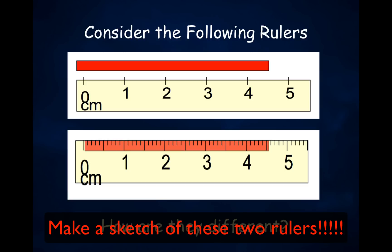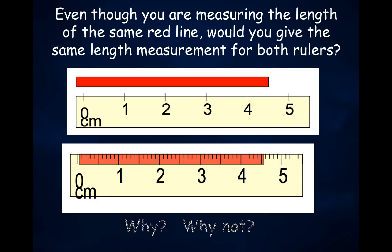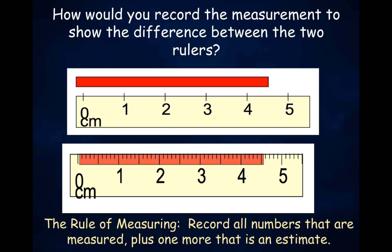They will look at the number of significant figures in your measurement and determine how the measuring tool was graduated. Consider the following rulers — how are they different? Even though you would be measuring the length of the same red line, would you give the same length measurement for both rulers? The rule of measuring: record all numbers that are measured — those you know for certain — plus one more that is an estimate.